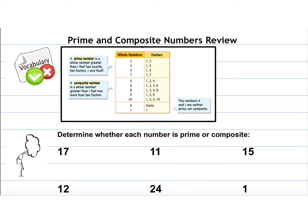This is a little review for us on prime or composite numbers, because this will help with our prime factorization today, because we are breaking down numbers into prime numbers. Remember, a prime number can only be divided by 1 and itself, whereas composite numbers have more than those two factors.